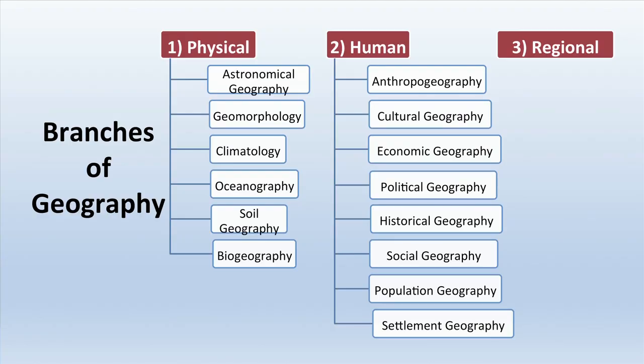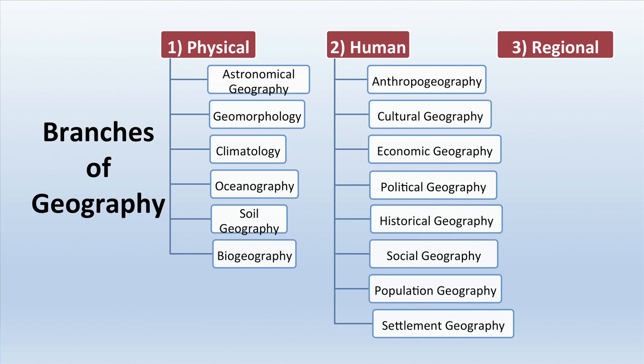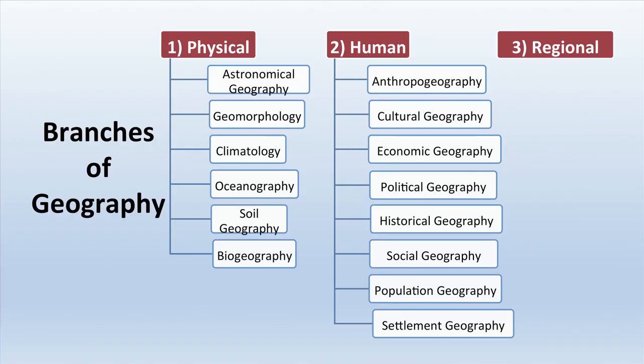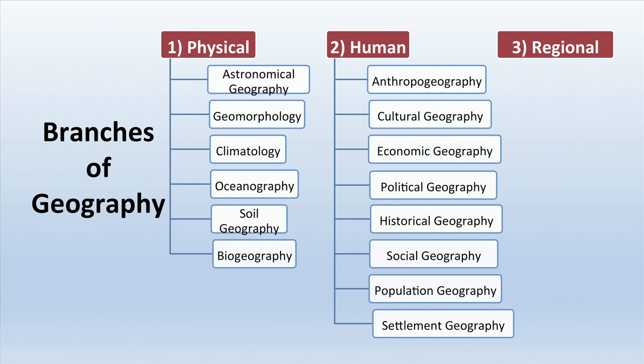What are the branches of geography? Geography mainly has three important branches. First, physical geography — we study all physical aspects on the earth surface, including sub-branches like astronomical geography, geomorphology, climatology, oceanography, soil geography, and biogeography. Second, human geography includes anthropo-geography, cultural geography, economic geography, political geography, historical geography, social geography, population geography, and settlement geography. Third, the regional branch, where various aspects are studied depending upon the defined region.